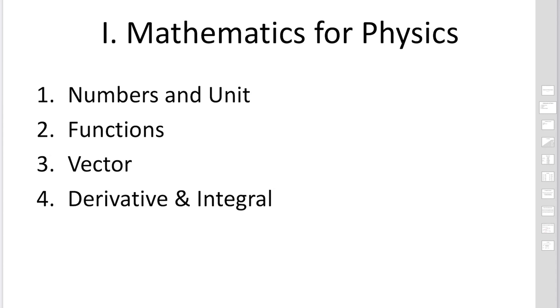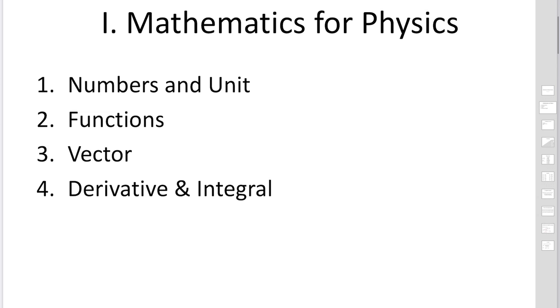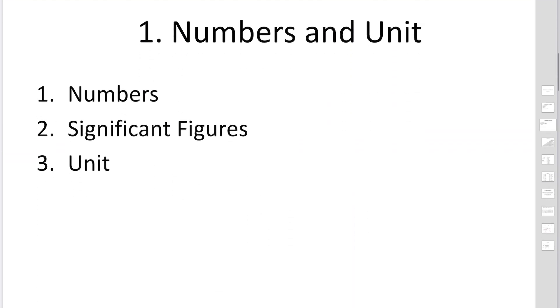Hello everyone. Introduction to physical sciences has three chapters. The first chapter covers mathematics for physics. We have several sections: numbers and unit, functions, vector, and derivative and integrals. Today we are going to study numbers and unit.